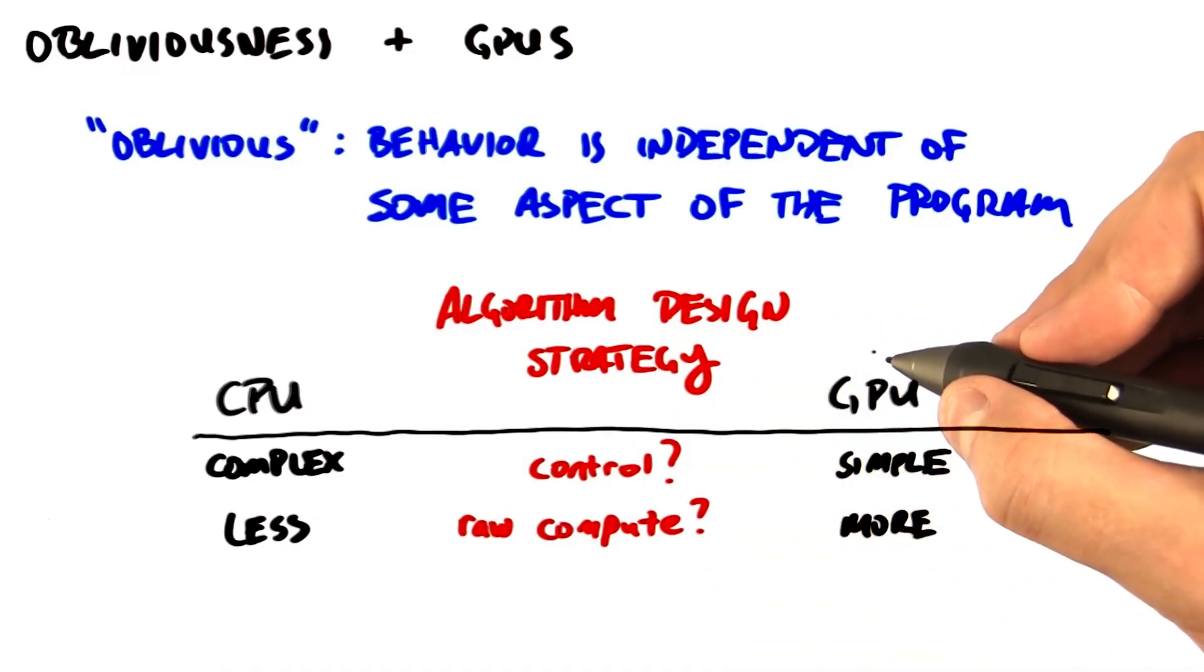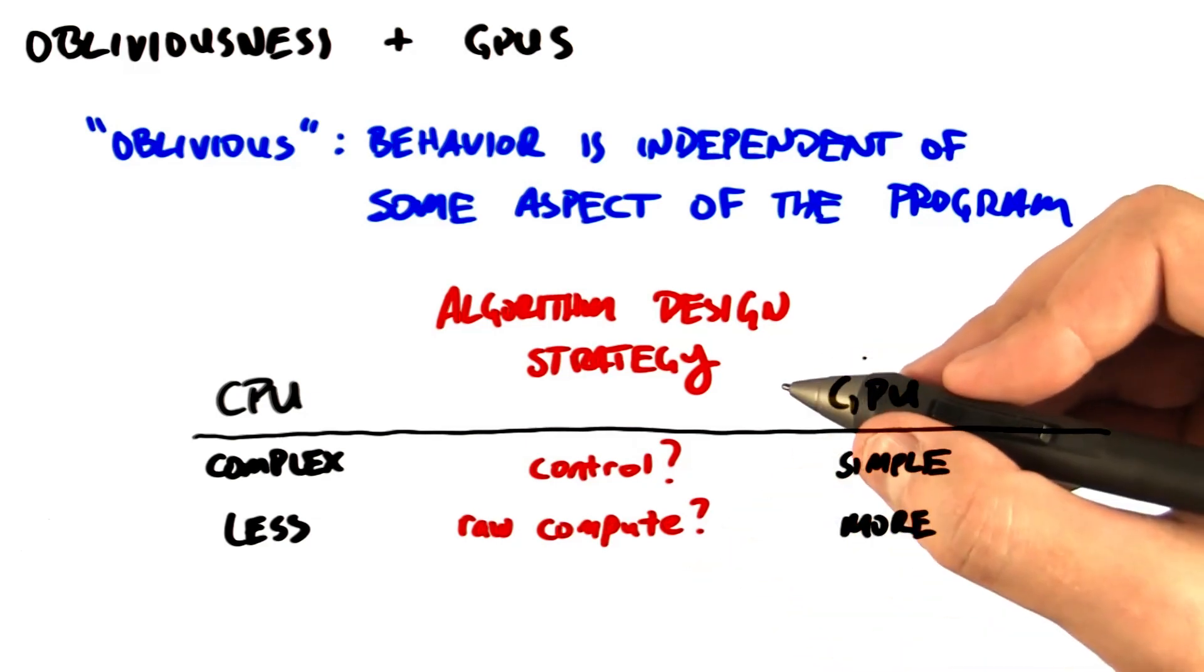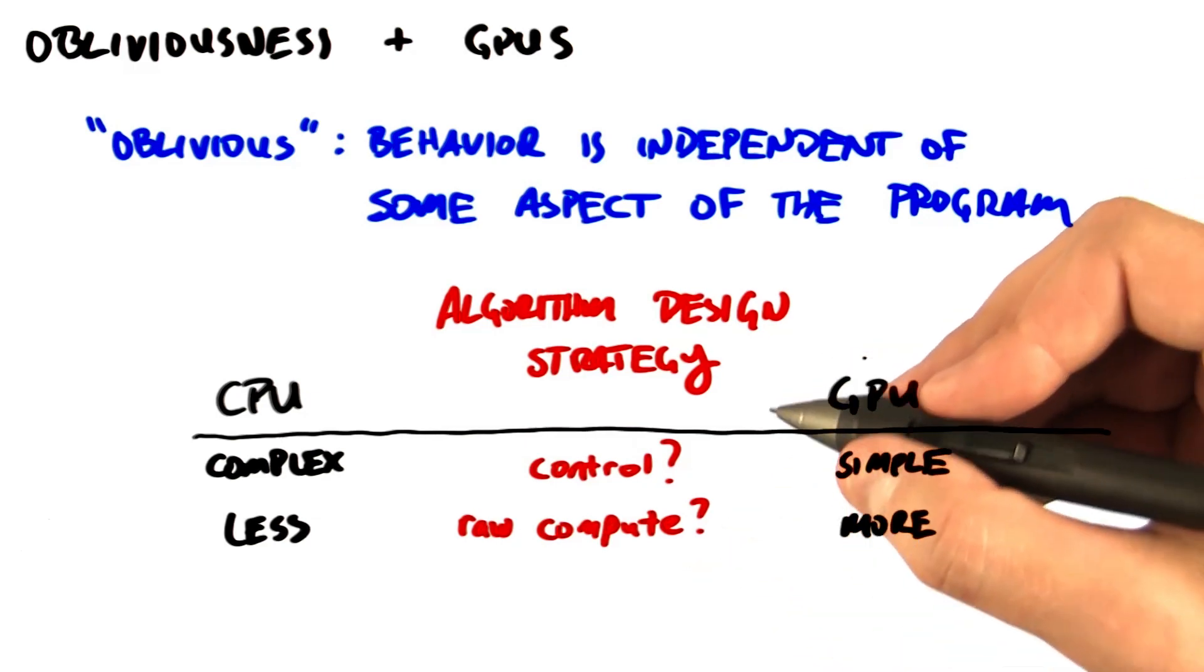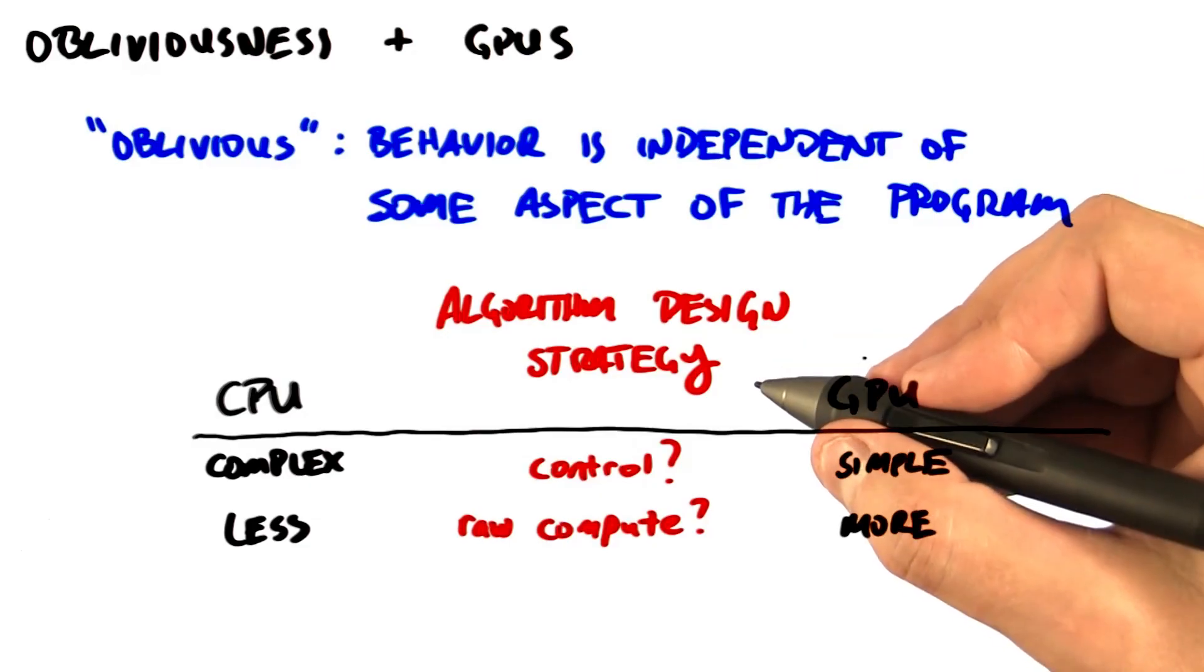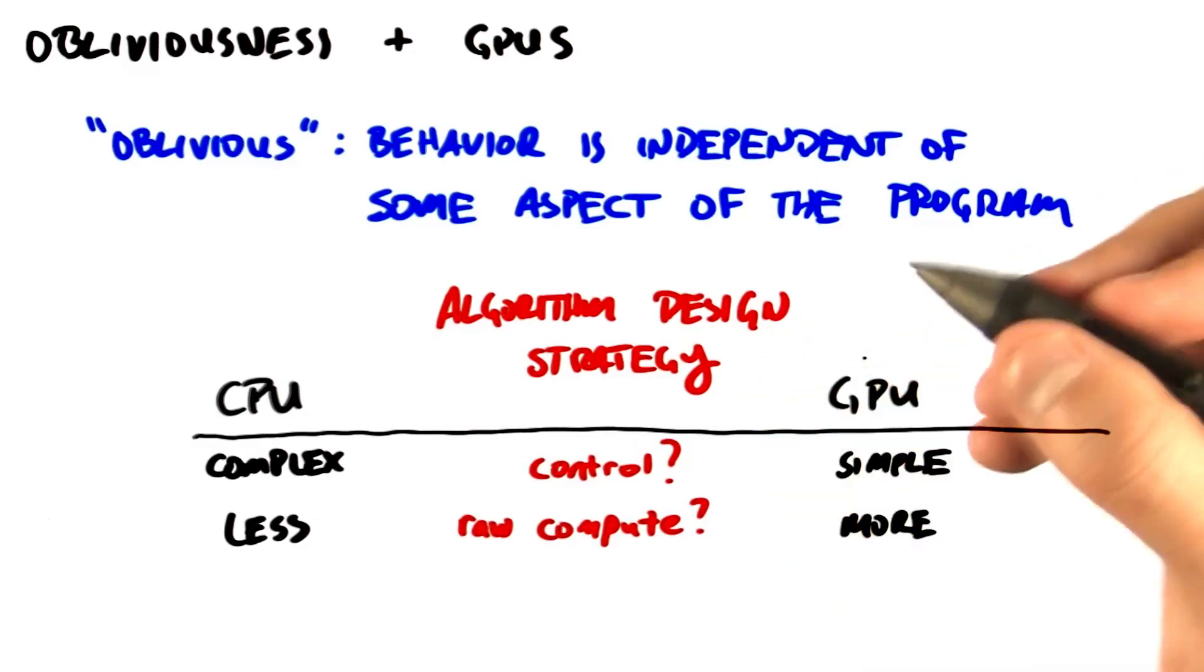GPUs aren't so great at complex control flow. Instead, they're great at simple control flow and massive parallelism, and Oblivious algorithms are generally a good match for massively parallel approaches to problems. Okay, let's return to sorting.